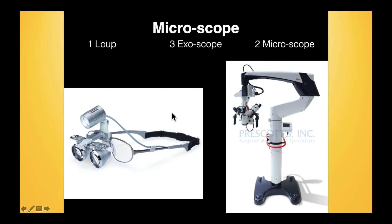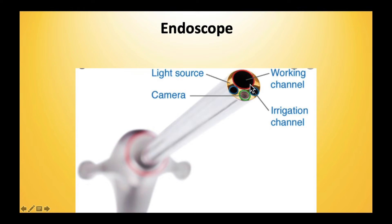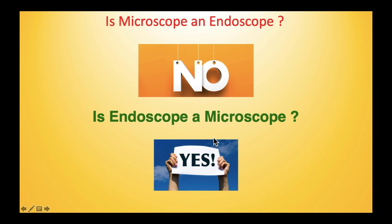An endoscope is different: the channel itself has the light and camera mounted onto it. It is shaped like a pencil. Some endoscopes have an irrigation channel to carry water in and out. Working instruments can also be passed through the endoscope, and when this is possible, it is called a working channel endoscope.